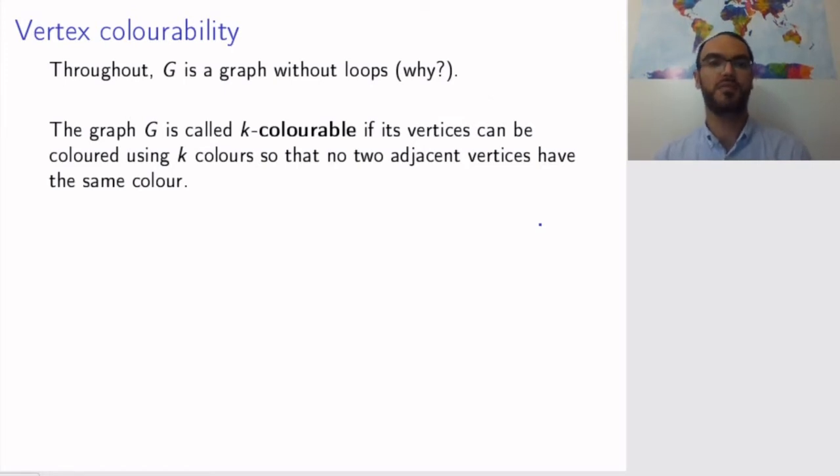And that's precisely what we want. We call the graph k-colorable if its vertices can be colored using k colors so that no adjacent vertices have the same color. For example, this graph is one colorable obviously, but it's also 17 colorable. There is no requirement that I actually use all my colors.